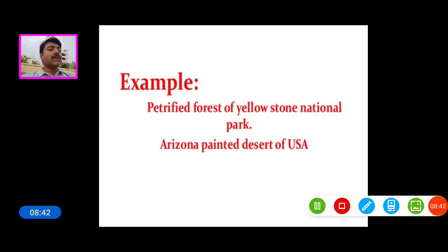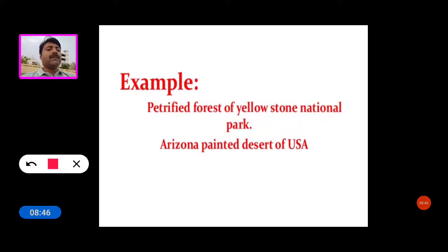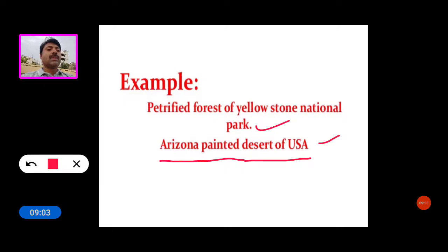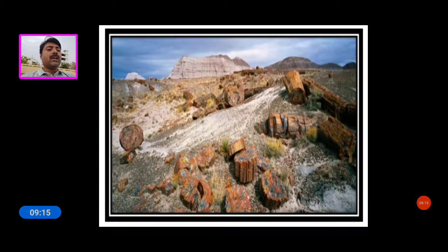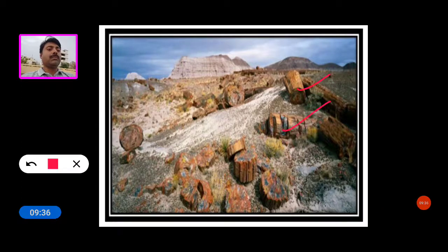An example of petrification is the petrified forest of Yellowstone National Park, located in the Arizona Painted Desert of the USA. You can see the petrified stems and parts of plants in the Yellowstone National Park.